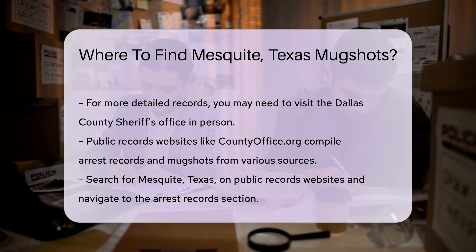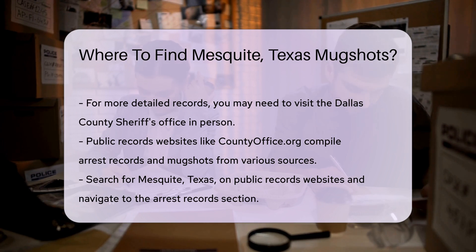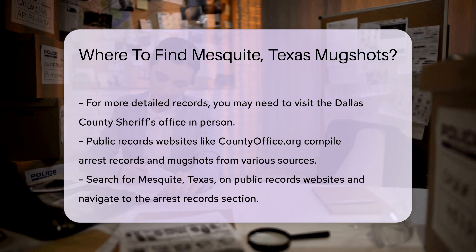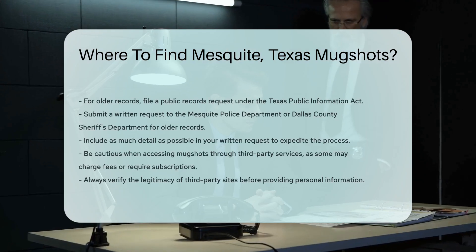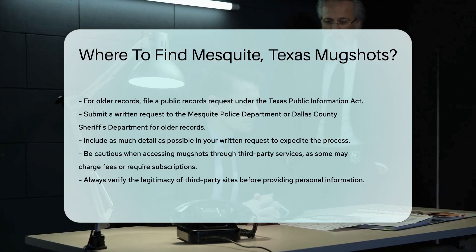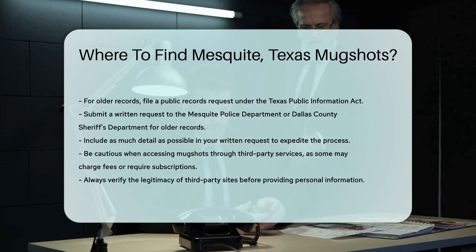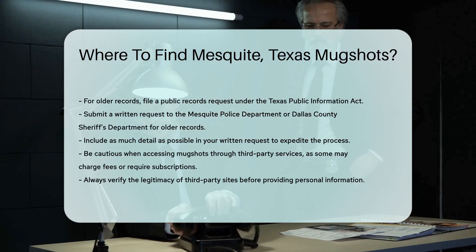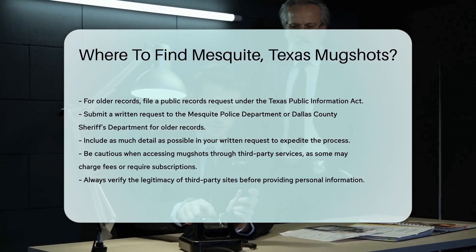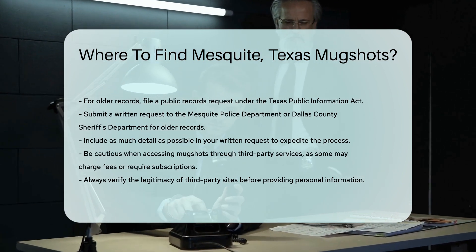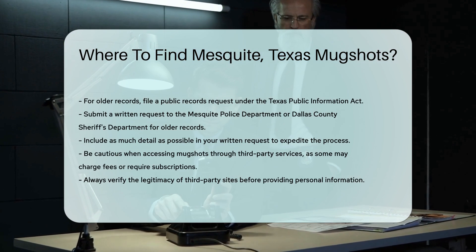If you need older records, you might need to file a public records request. The Texas Public Information Act allows you to request records from government agencies. Submit a written request to the Mesquite Police Department or Dallas County Sheriff's Department, and include as much detail as possible to expedite the process.